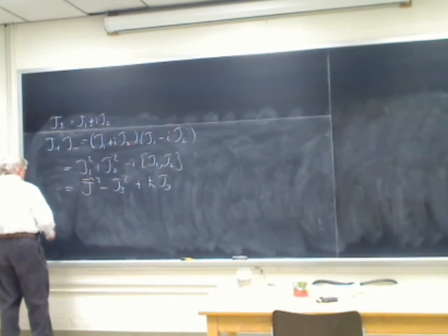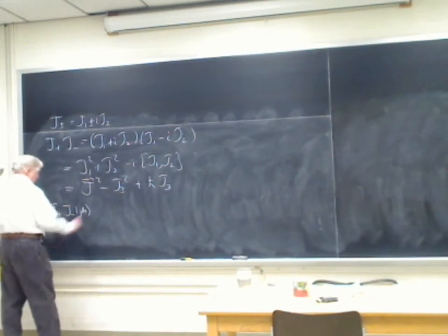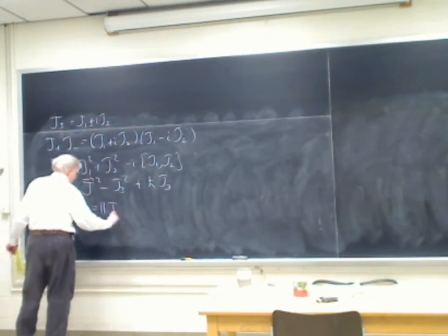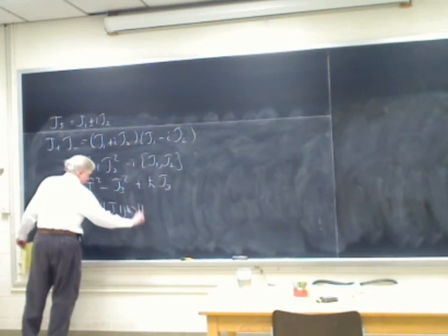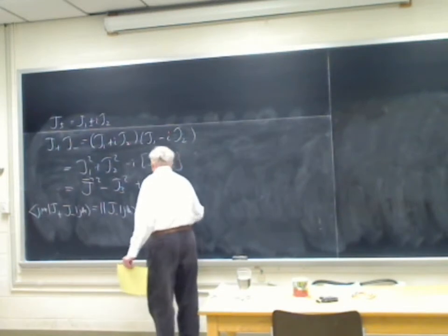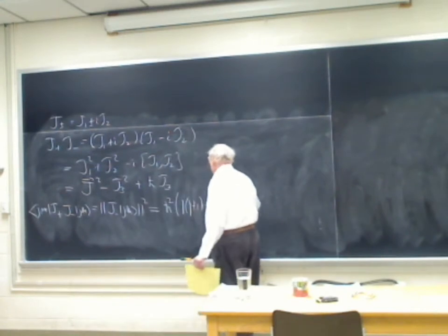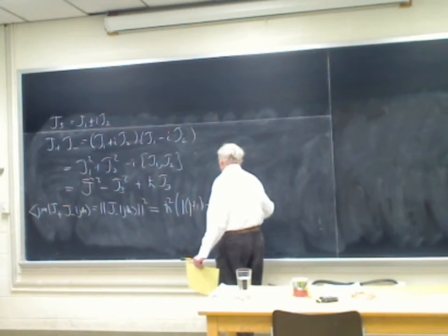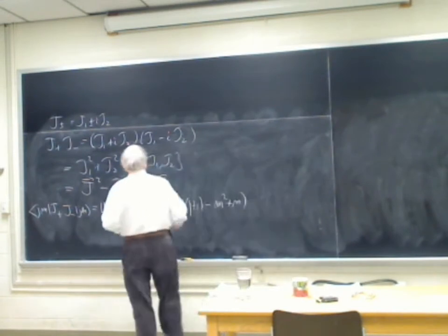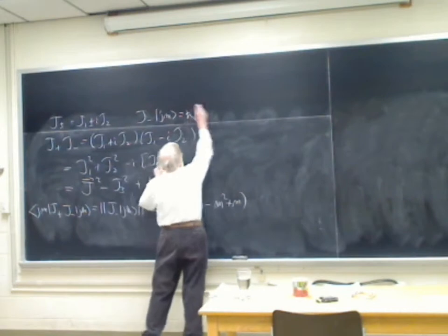Consequently, taking the matrix element in the state |jm⟩, which is the same as the norm of J₋|jm⟩ squared, what we get is ℏ² times j(j+1) minus m² plus m. And so J₋|jm⟩ equals ℏ times the square root of that, giving the state |j, m−1⟩.